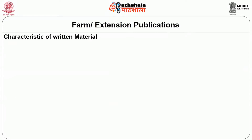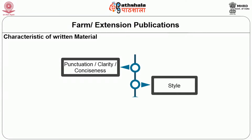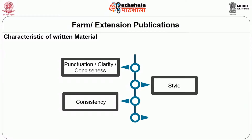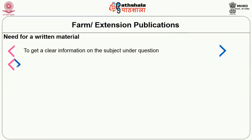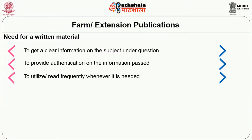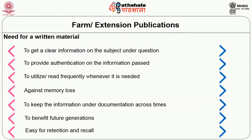Characteristics of written material include: punctuality, clarity, and conciseness; an appropriate style of writing; consistency in information; and interest — it should be written in such a way that readers are interested. The need for written material includes: to get clear information on the subject; to provide authentication of information; to utilize and read frequently when needed; to guard against memory loss; to keep information and documentation across time; to benefit future generations; and for easy retention and recall.